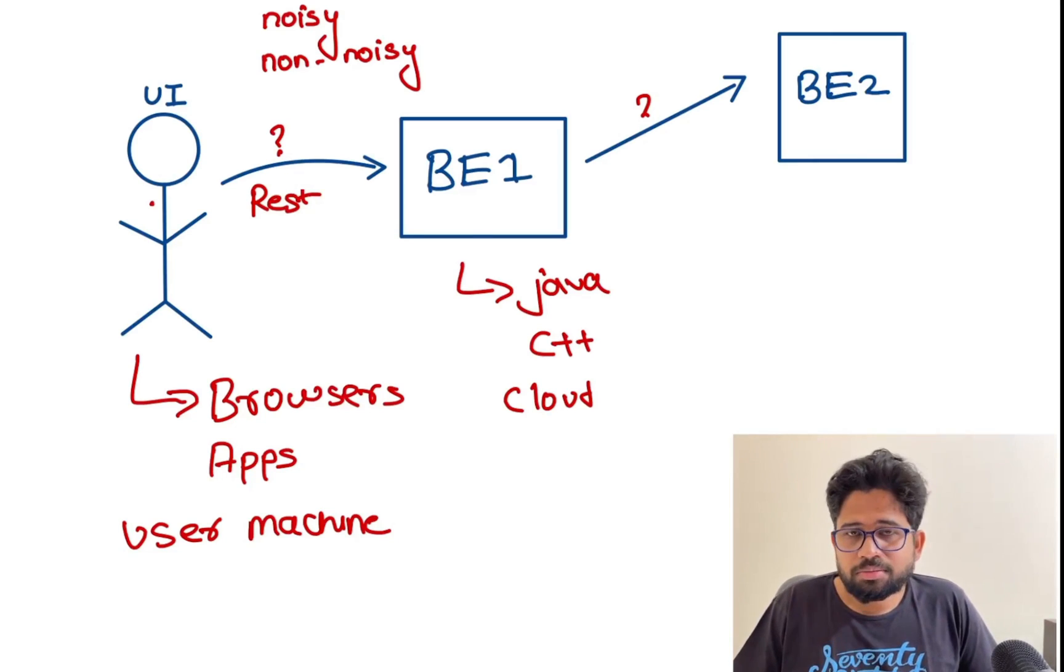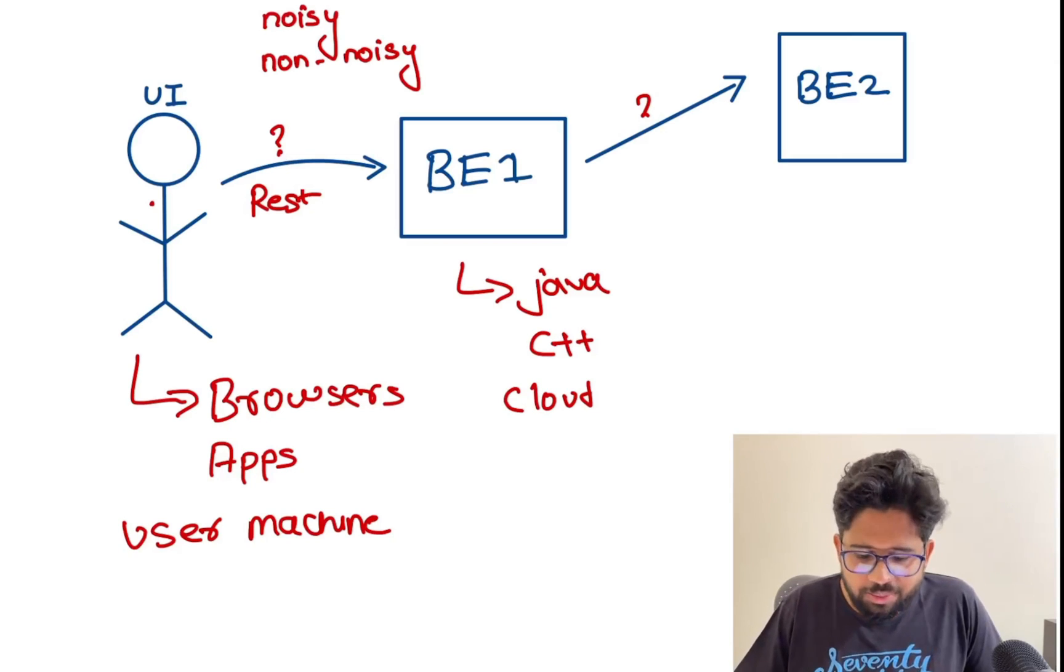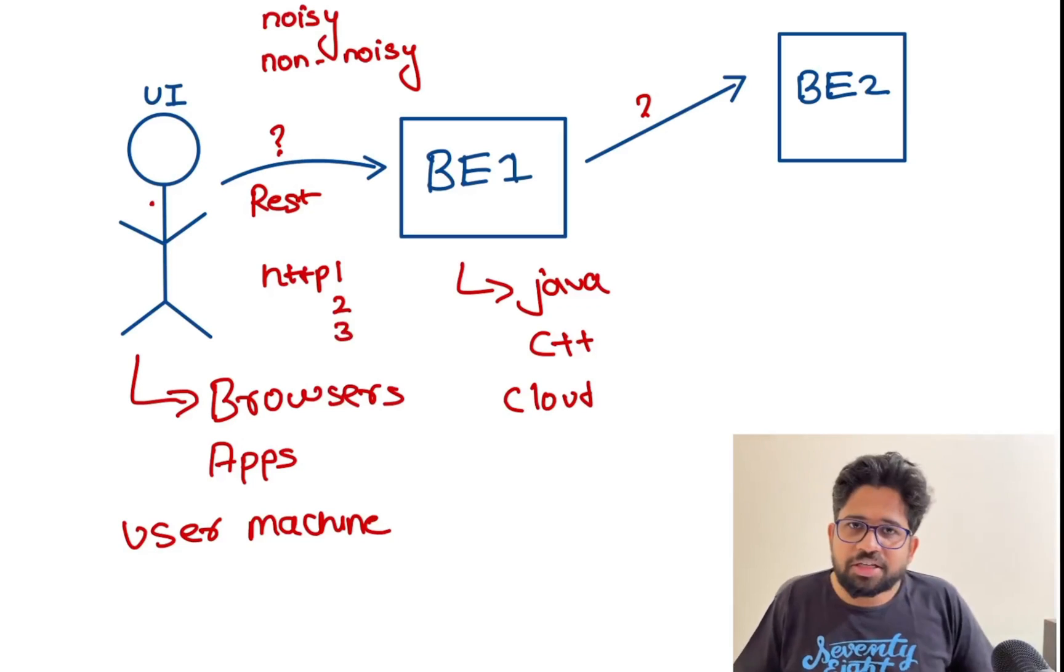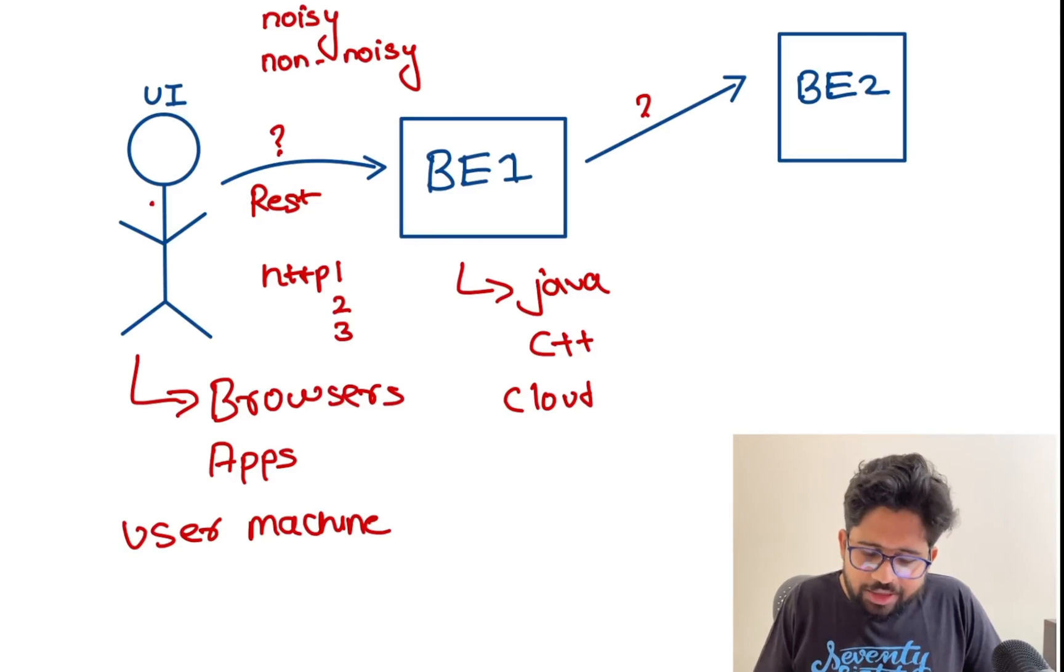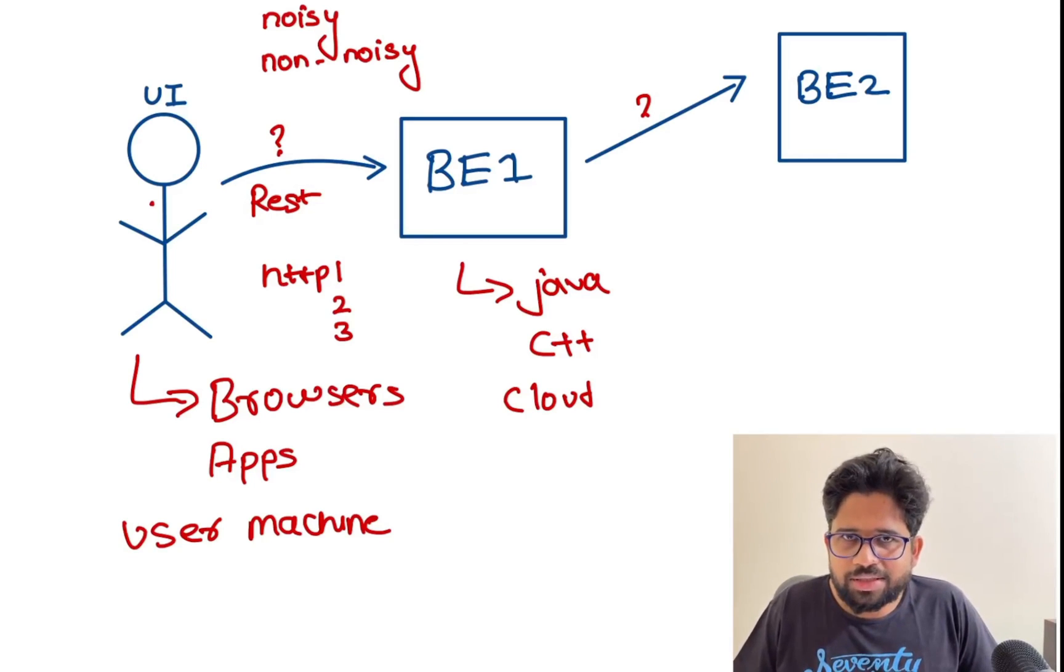This communication happens through REST. The REST protocol can be called using HTTP 1, HTTP 2, or even HTTP 3. HTTP 3 is a fairly new protocol, also called QUIC, and it has recently received its RFC number. It's not as popular as HTTP 2 and 1, which are being heavily used in the front-end world. Of course, the backend needs to support them. The backend will process the request from the UI.